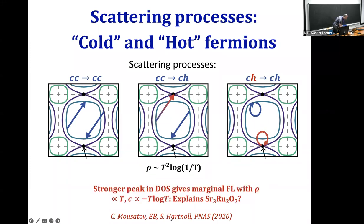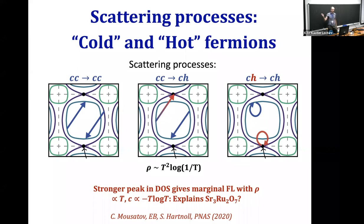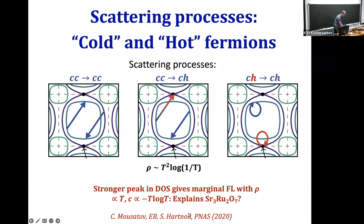In a paper with Sean and Connie from a couple of years ago, we applied the same mechanism to a slightly more exotic case: the bilayer strontium ruthenate material Sr₃Ru₂O₇, which apparently has a stronger Van Hove singularity than the ordinary logarithmic one. We invoked that to get the behavior observed there, which is linear-in-T resistivity and a specific heat that diverges like T logT. We believe this is actually the right mechanism for that material.